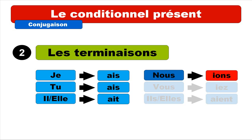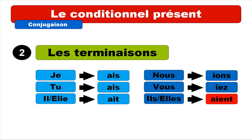For nous, it's -I-O-N-S and you pronounce it like -IONS. For vous, it's -I-E-Z and you pronounce it like -IEZ. And then ils/elles plural: -A-I-E-N-T — don't worry about all these letters, just pronounce it -AIENT. So je, tu, il, elle singular and ils/elles plural all share the same phonetic form -AIS/-AIT/-AIENT. Nous is -IONS and vous is -IEZ.